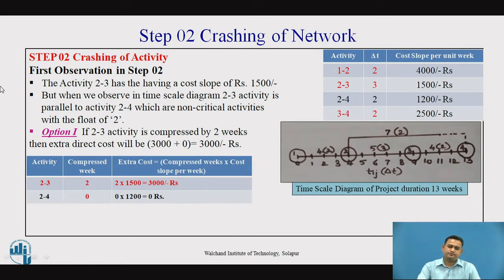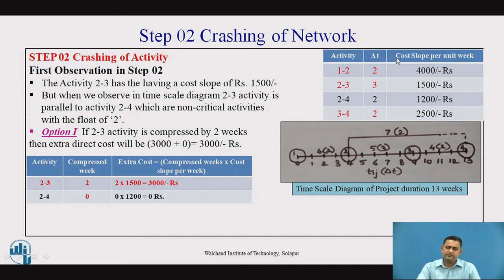Now let us start to crash the activities. Observing the table: the second column represents delta t, showing we can compress each activity by 2 weeks, 3 weeks, 2 weeks, and 2 weeks respectively, with their corresponding cost slopes. We observe that 1,200 is the minimum cost slope, belonging to activity 2-4, but activity 2-4 is a non-critical activity. So we go for the second minimum cost slope, which is 1,500, related to activity 2-3.